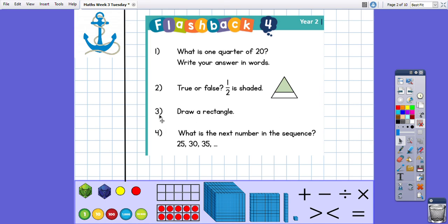Question three wants you to draw a rectangle. Remembering a rectangle has got two shorter sides and two longer sides. And question four, which number is the next in this sequence? 25, 30, 35, it would be 40. These are multiples of five, they are the numbers in our five times table.